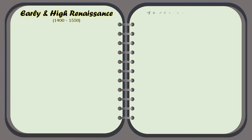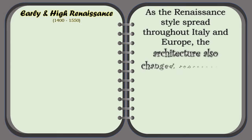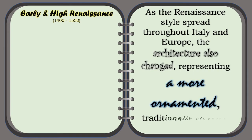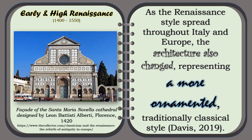According to Davis, as the Renaissance style spread throughout Italy and Europe, the architecture also changed, representing a more ornamented, traditionally classical style. For example, the façade of the Santa Maria Novella Cathedral, designed by Leon Battista Alberti in Florence in 1420.